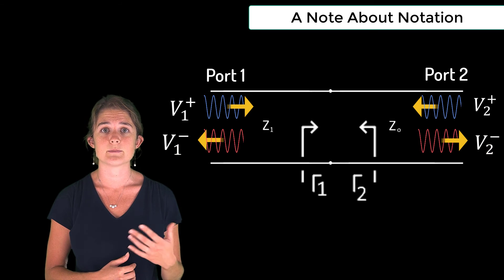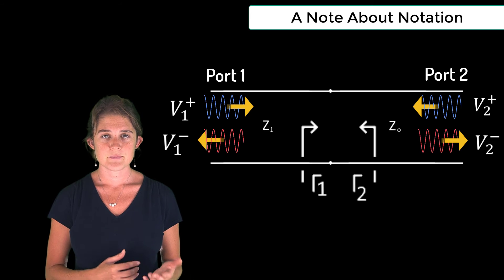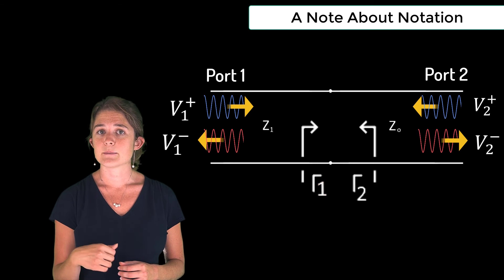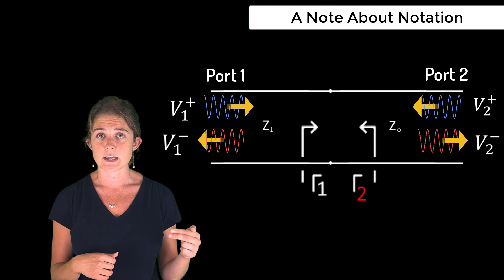The gamma terms are similarly subscripted according to their perspective. Gamma sub 1 is the reflection coefficient looking in port 1, and gamma sub 2 is the reflection coefficient looking in port 2.